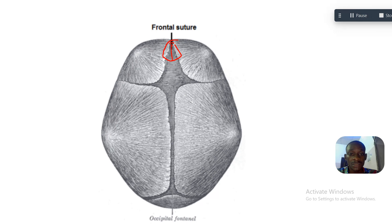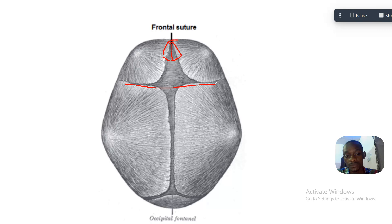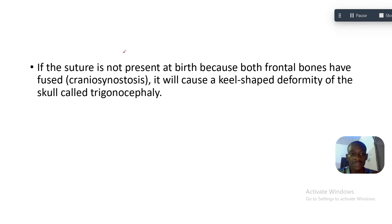This suture actually fuses — the two bones fuse together. The anterior frontal area becomes the bregma, this becomes the coronal suture, and so on. If this suture is not present at birth because both frontal bones have fused, that is cranial synostosis.